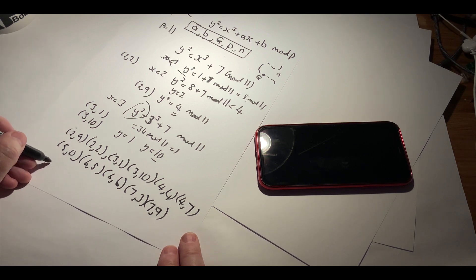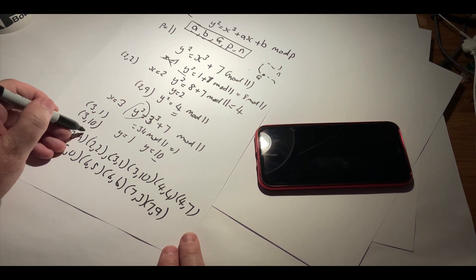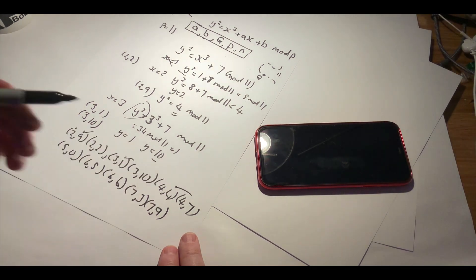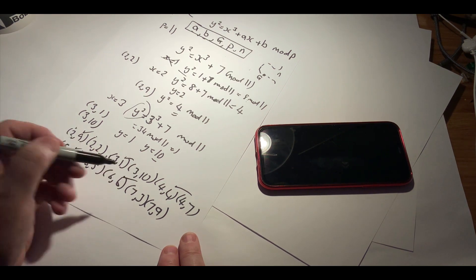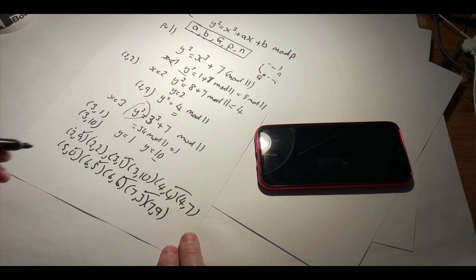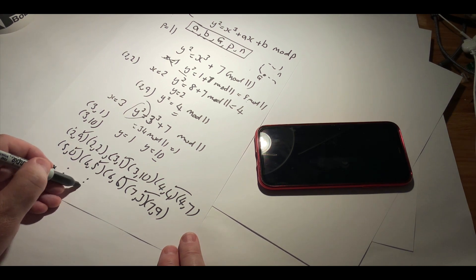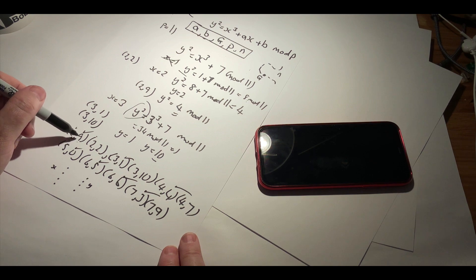We can see that the values that we've got going in will always give us a different value out. So this gives us a 9, a 1, a 4, a 0, a 5, 6, and a 3. So we have a mapping from the x to the y where we will always get a unique point out for the curve.